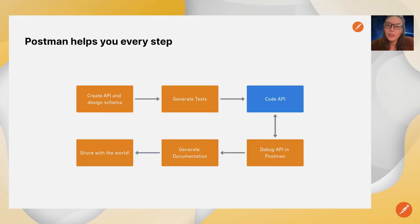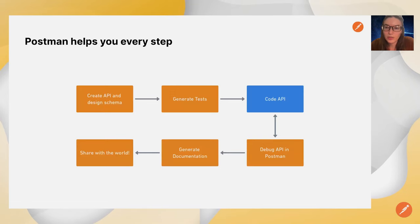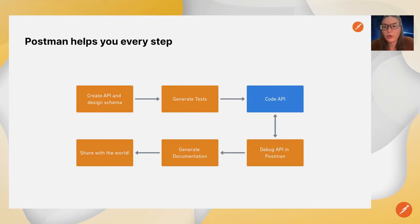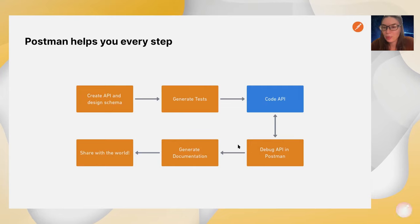So how can Postman help us build out our API in an API-first way? Every step of the way, Postman is here to hold our hands. We're going to create an API in Postman, use that to generate some tests, and while we're coding our API, we can use those tests to debug as we go. We can also generate documentation right from the schema so our API can be consumed by people, and share it with the world through Postman's API network.